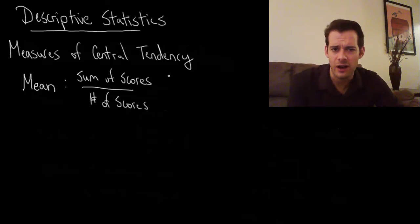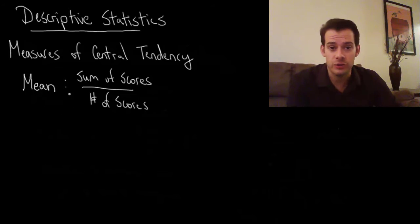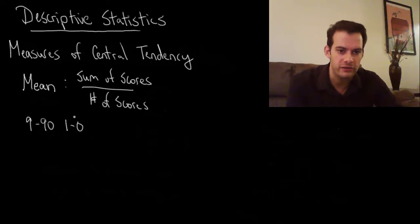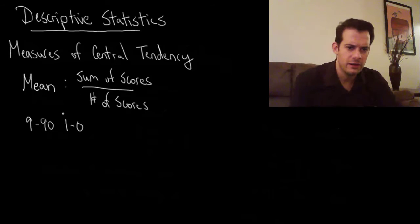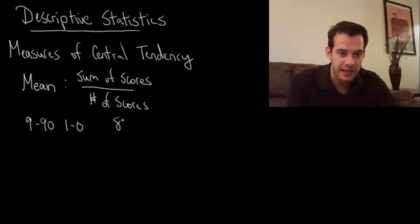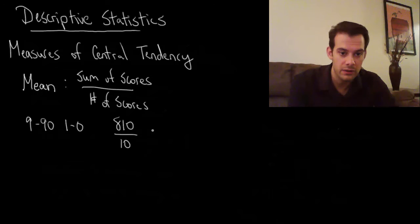You've probably calculated an average before, but let's look at an example. Let's say I give ten students a test and nine of those students earn a 90, and one student earns a zero. So we have 90 times nine plus zero, which gives us 810, and then we divide by the total number of students, which is ten. So the average is 81.